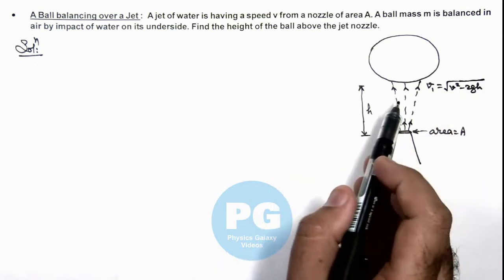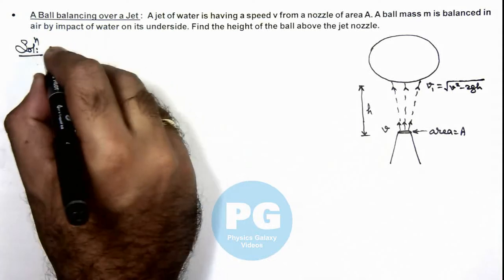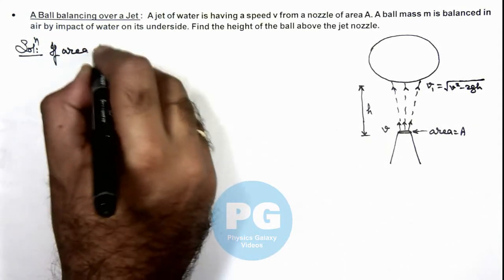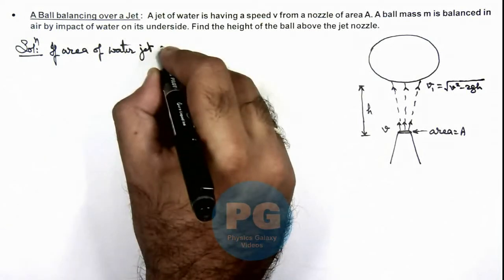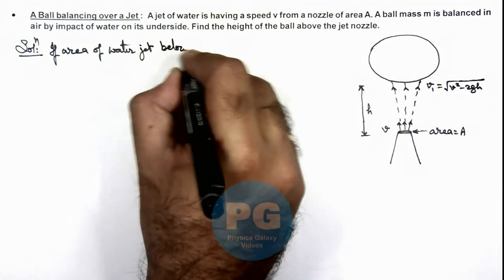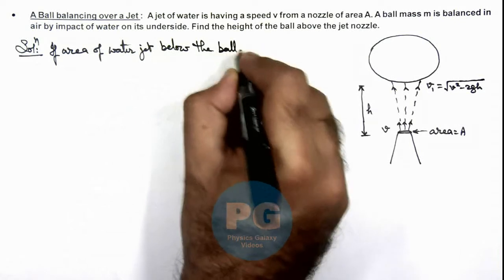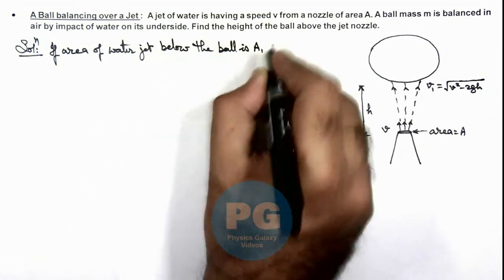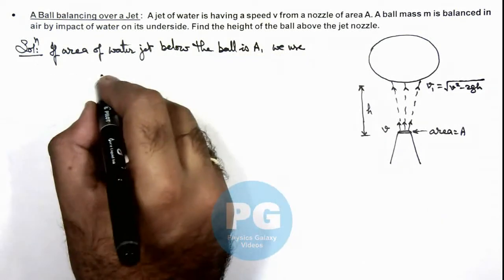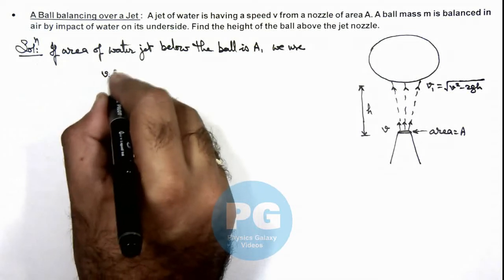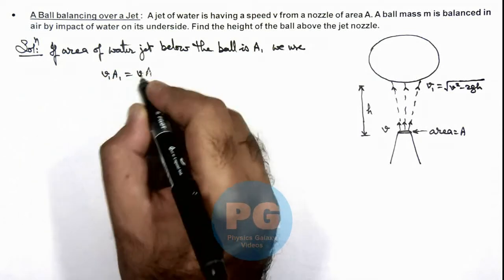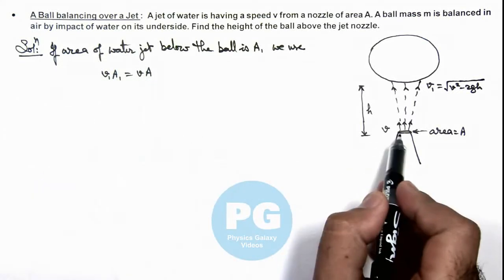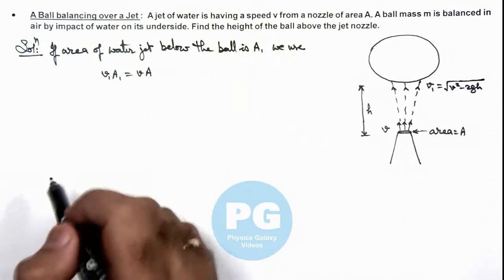Now in this situation we can say if area of water jet below the ball is A1, we use v1 A1 should be equal to v A, if we consider v to be the velocity with which water is coming out from the nozzle which is already given to us.